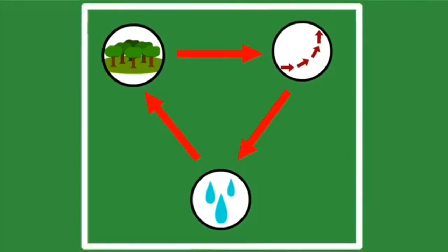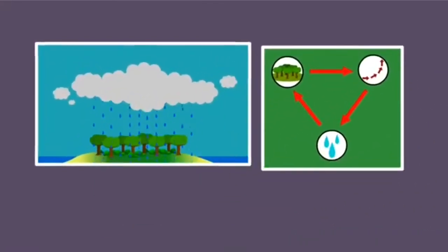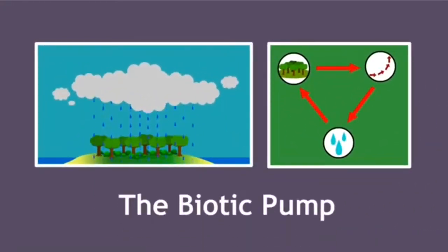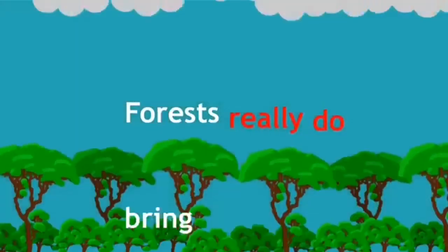Essentially, forests create a giant, constant air current that attracts moisture from hundreds of miles away. This is how we find so much water so far from the ocean. The forests bring it in. This process is known as the biotic pump, and it shows how traditional wisdom was right all along. Forests really do bring the rain.